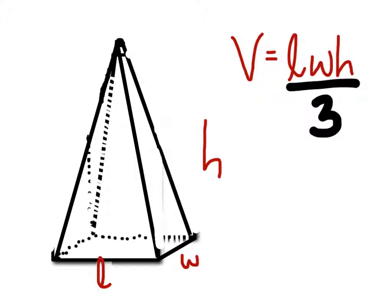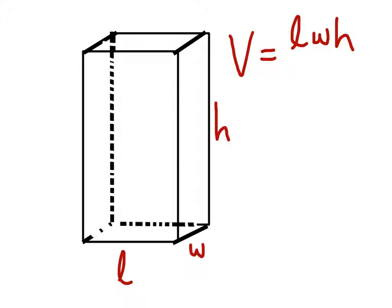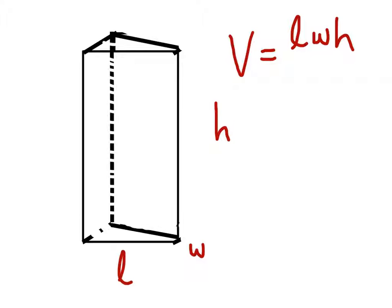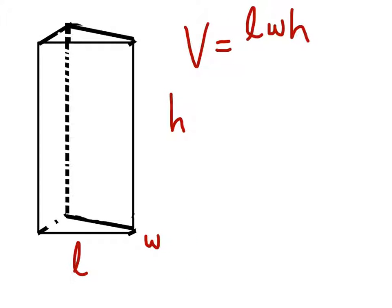For rectangular prisms that's how it works, but for triangular prisms it's going to be just a little bit different. The volume of the rectangular prism is length times width times height — that's the basis for pretty much all of these shapes. Now, if we wanted to make this a triangular prism, what we'd have to do is cut it in half. This triangular prism is just half of the original rectangular prism.